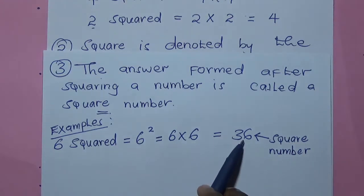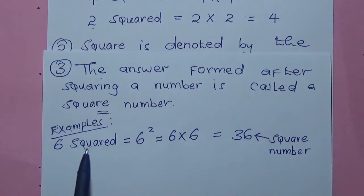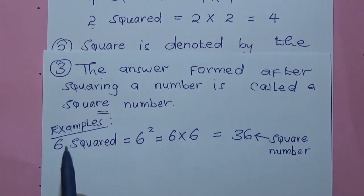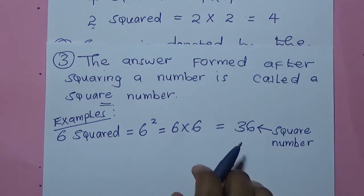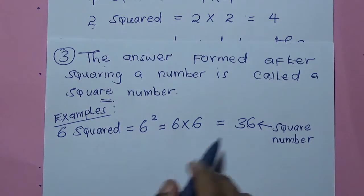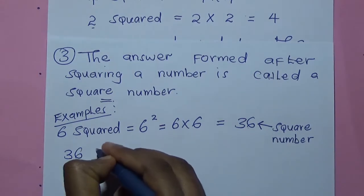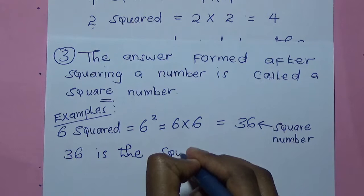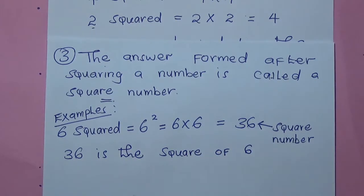A square number is the number you get after squaring a number, or the answer you get after you have squared a certain number. And we can say that 36 is the square of 6.